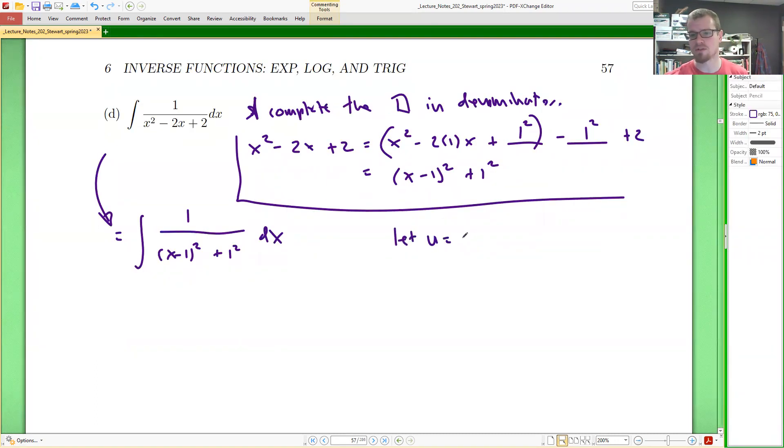But if I complete the substitution, I would let u be x minus 1. So du is equal to dx. And this would give us the integral of 1 over u squared plus 1 squared du.